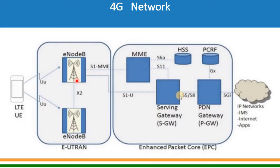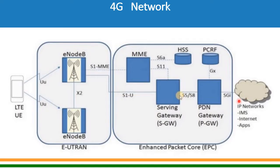Let us look at the various interfaces used in the 4G network. The radio interface between mobile and E Node B is called the UU interface. The user-plane interface between E Node B and Serving Gateway — where actual data traffic flows — is called S1U. The interface between Serving Gateway and PDN Gateway is S5 or S8, and the interface from PDN to IP network is SGi.